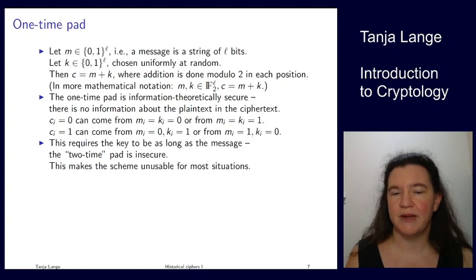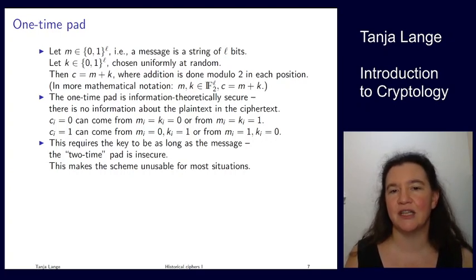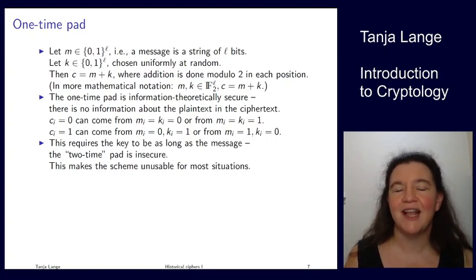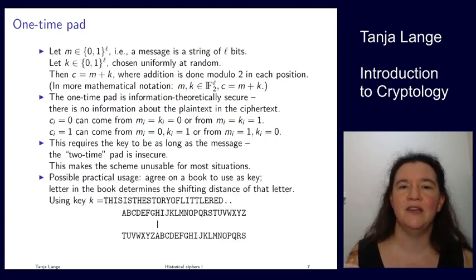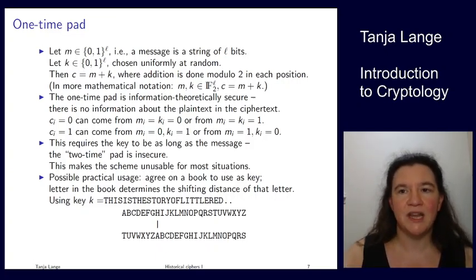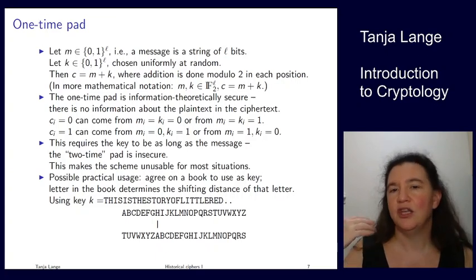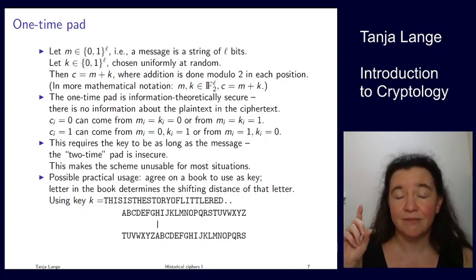This assumes the key is chosen uniformly at random, with no biases. The key must be as long as the message, and you must never reuse this pad — it's not a two-time pad if you don't have enough one-time pad. That would be insecure, as I'll cover in the next lecture. For most situations — if you're not in spycraft or not securing the red phone between Moscow and Washington — this is not the crypto for you.